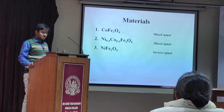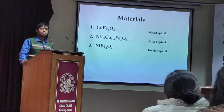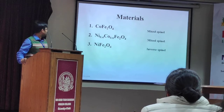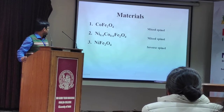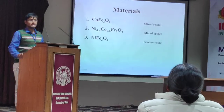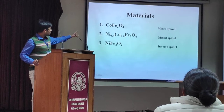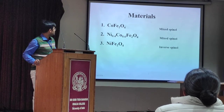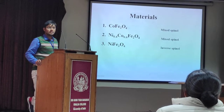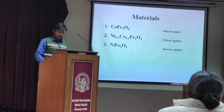I prepared CoFe2O4 and substituted cobalt with nickel, and finally reduced the cobalt content to prepare NiFe2O4. The resulting structures are: the first is mixed spinel ferrite, the second is mixed spinel ferrite, and the third is inverse spinel ferrite, which I will discuss later.